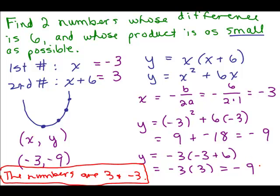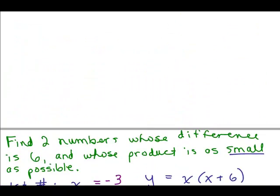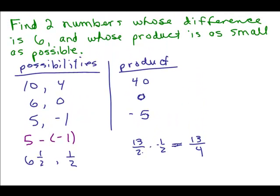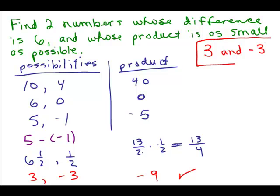So notice my smallest product was negative 9. Look back up here when we were just trying some possibilities. We got a product of 40, 0, negative 5, 13 fourths. None of these were as small as our answer is. The answer here was 3 and negative 3. That's two numbers whose difference is 6. Think about where they are on the number line. They're 6 spaces apart. 3 minus a negative 3 does equal 6, in other words. And their product was negative 9. So that ended up being the very smallest product. So the answer is 3 and negative 3.